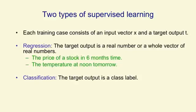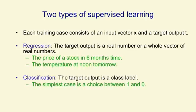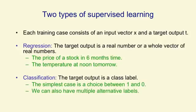In classification, the target output is a class label. The simplest case is a choice between one and zero, between positive and negative cases. But obviously we can have multiple alternative labels, as when we're classifying handwritten digits.